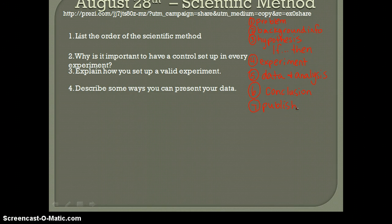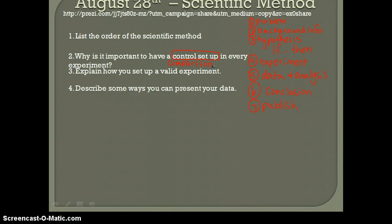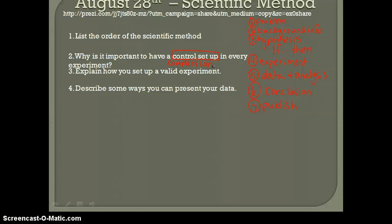Question two. Why is it important to have a control setup in every experiment? The control setup is your comparison. You take away the variable in the control setup and you compare your results to the control setup. If you don't have a control setup, it's not a valuable experiment and you don't know if the results actually are working or if the data is actually good data.